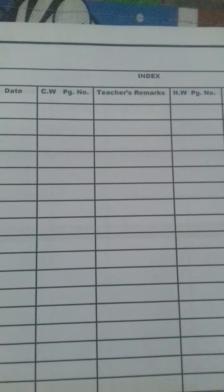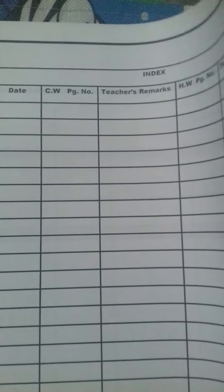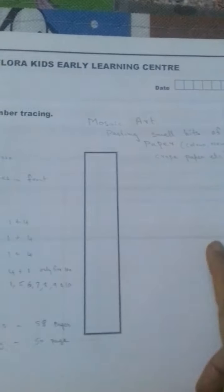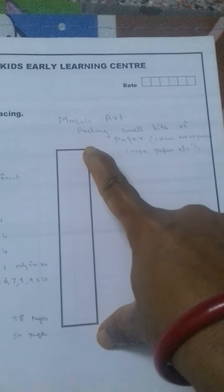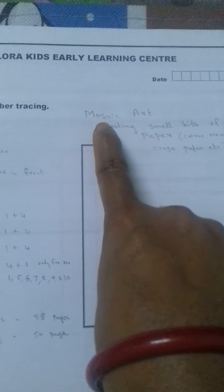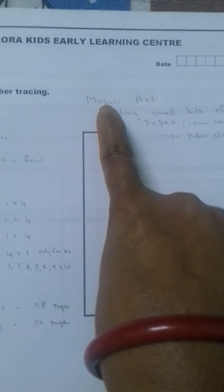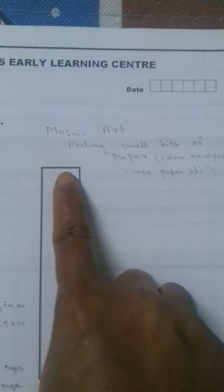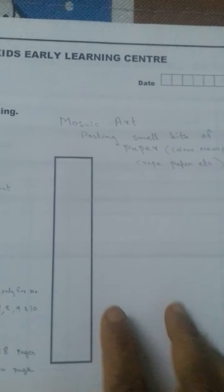Then comes our large number tracing. Here the font size is pretty good, and the first type of activity you can give for the child is mosaic art—that is pasting small bits of papers. It can either be color papers, newspapers, or crepe papers. Apply glue on the number and ask the child to paste the tiny bits of paper.